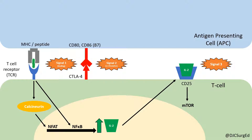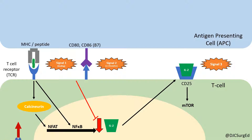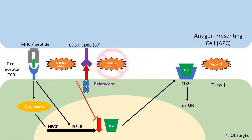CTLA-4 induces an inhibitory signal that down-regulates T cell activation and is the target of induction regimens. Abatacept is a CTLA-4 immunoglobulin which blocks the co-stimulatory signal and subsequent T cell activation.